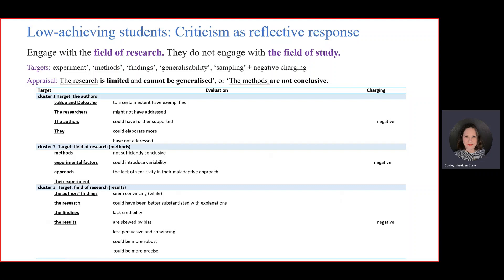This is what they write: things like credibility, skewed by bias, and so on. They're really harsh, which is quite funny when they are first-year students trashing something that presumably has gone through peer review. The overall constellation built across those 12 texts has authors as incompetent, methods as ill-designed, and results as invalid.